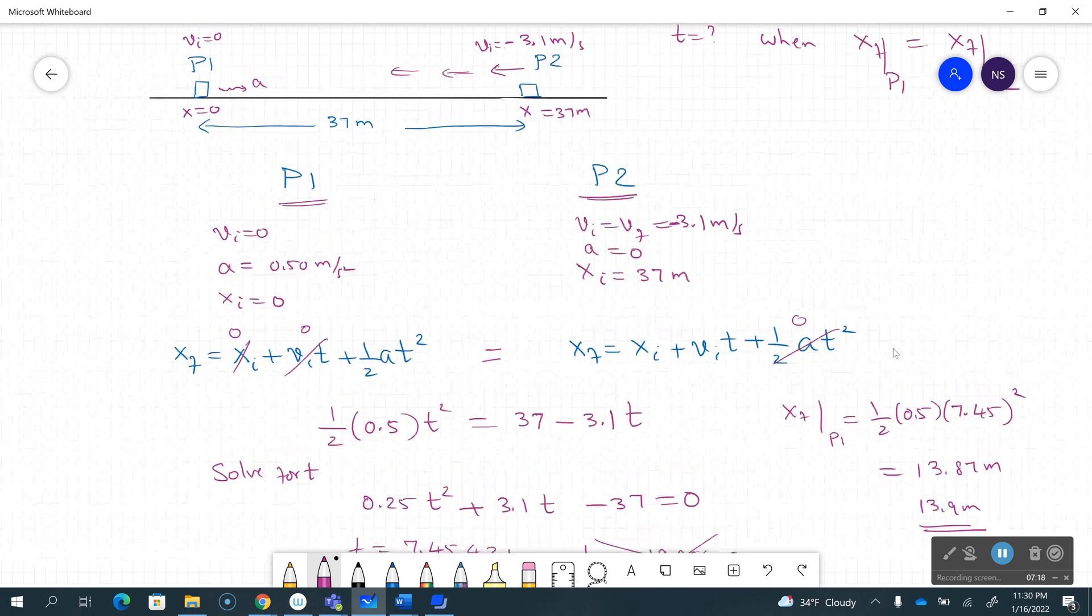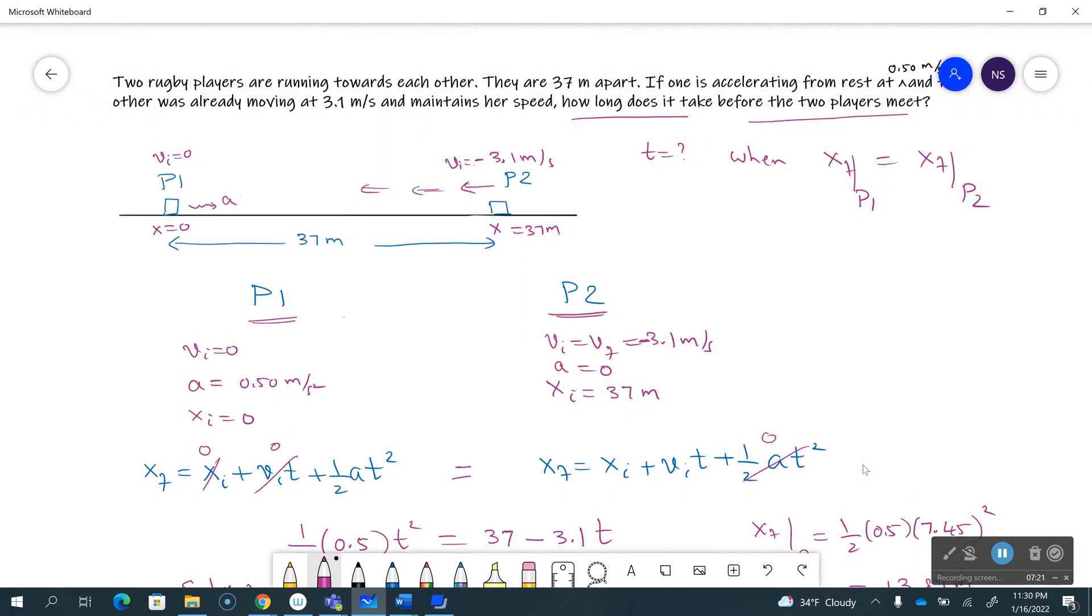Okay, so I will stop it here. Actually, if I was trying to draw a graph here, this is how the graph would have looked. So I have x versus t for both the players. I have x equals 0, x equals 37 here. When I have the first player starting from rest and accelerating, that's player one's trajectory, that's the player one's graph of x versus t.